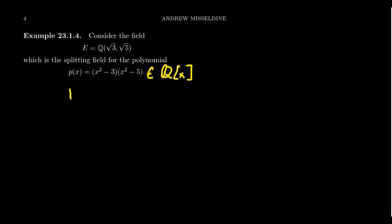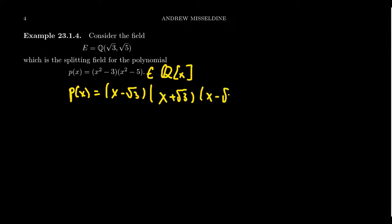If we think of P(x) as a polynomial over E, these polynomials actually factor. You get (x - √3)(x + √3)(x - √5)(x + √5). So we see that this polynomial does, in fact, split over the splitting field E.